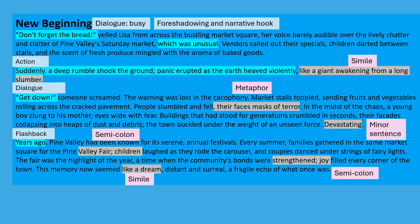Here is the improved story, which includes a lot of the features which your examiner is looking for, some of which occurred in the originally generated story, but many of which did not. New Beginning. 'Don't forget the bread,' yelled Lisa from across the bustling market square, her voice barely audible over the lively chatter and clatter of Pine Valley's Saturday market, which was unusual. Vendors called out their specials, children darted between stalls, and the scent of fresh produce mingled with the aroma of baked goods. Suddenly, a deep rumble shook the ground. Panic erupted as the earth heaved violently, like a giant awakening from a long slumber. 'Get down,' someone screamed. The warning was lost in the cacophony. Market stalls toppled, sending fruits and vegetables rolling across the cracked pavement. People stumbled and fell, their faces masks of terror. In the midst of the chaos, a young boy clung to his mother, eyes wide with fear. Buildings that had stood for generations crumbled in seconds, their facades collapsing into heaps of dust and debris. The town buckled under the weight of an unseen force.